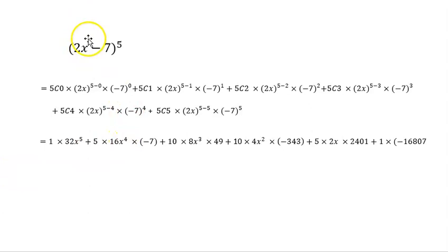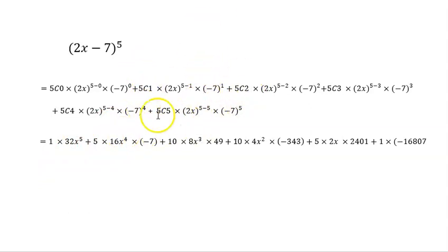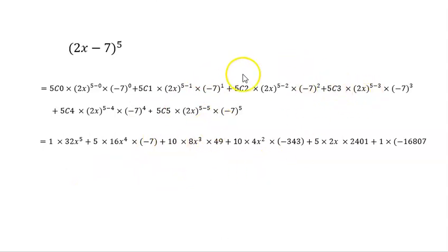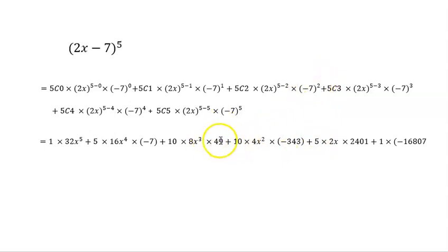Now evaluating each term: 5C0 = 1, and 2^5 = 32, so the first term is 32x^5. (−7)^0 = 1, so it doesn't change anything. For the second term, 5C1 = 5, and 2^4 = 16, giving 5 × 16x^4 × (−7), which equals −560x^4.